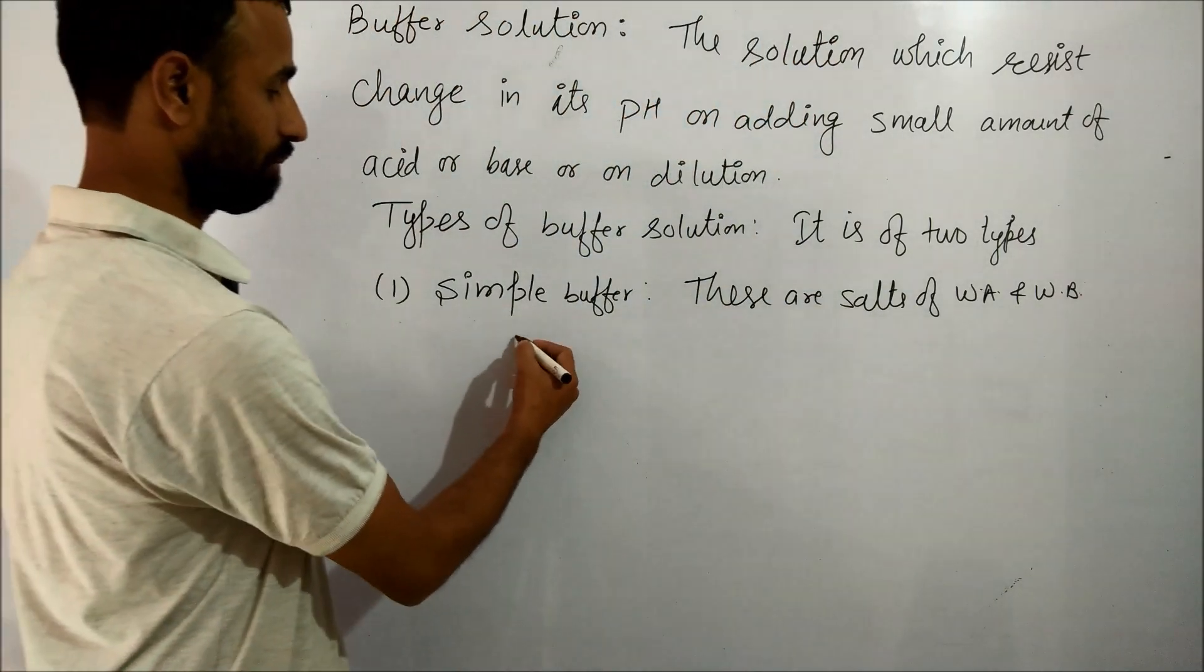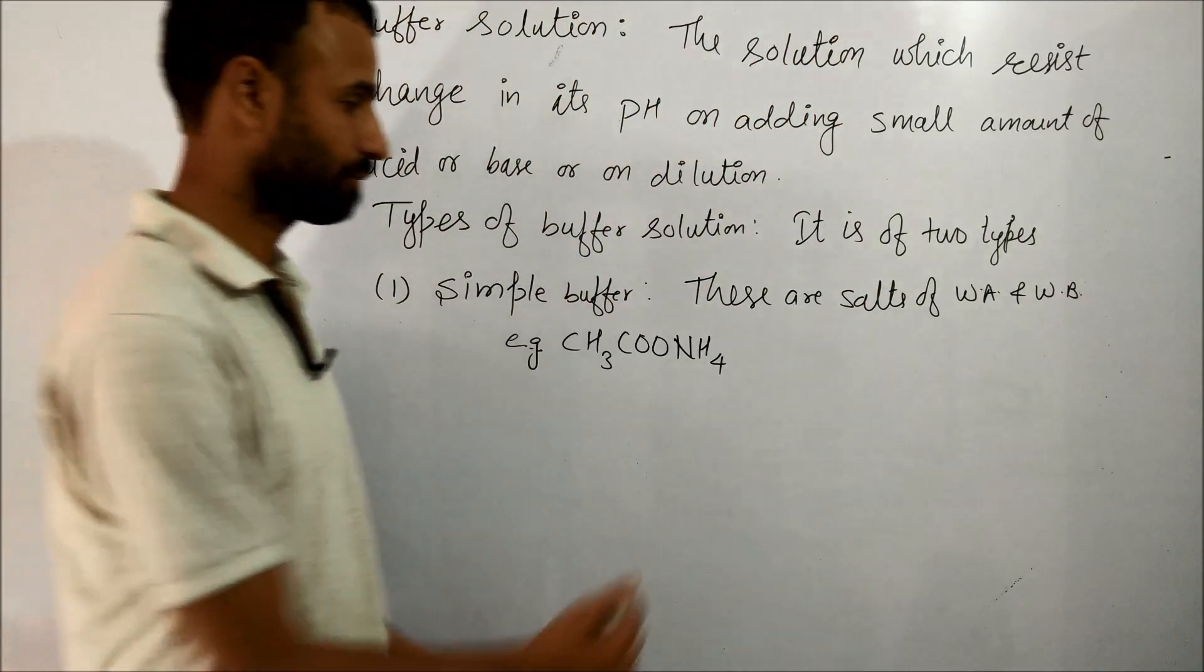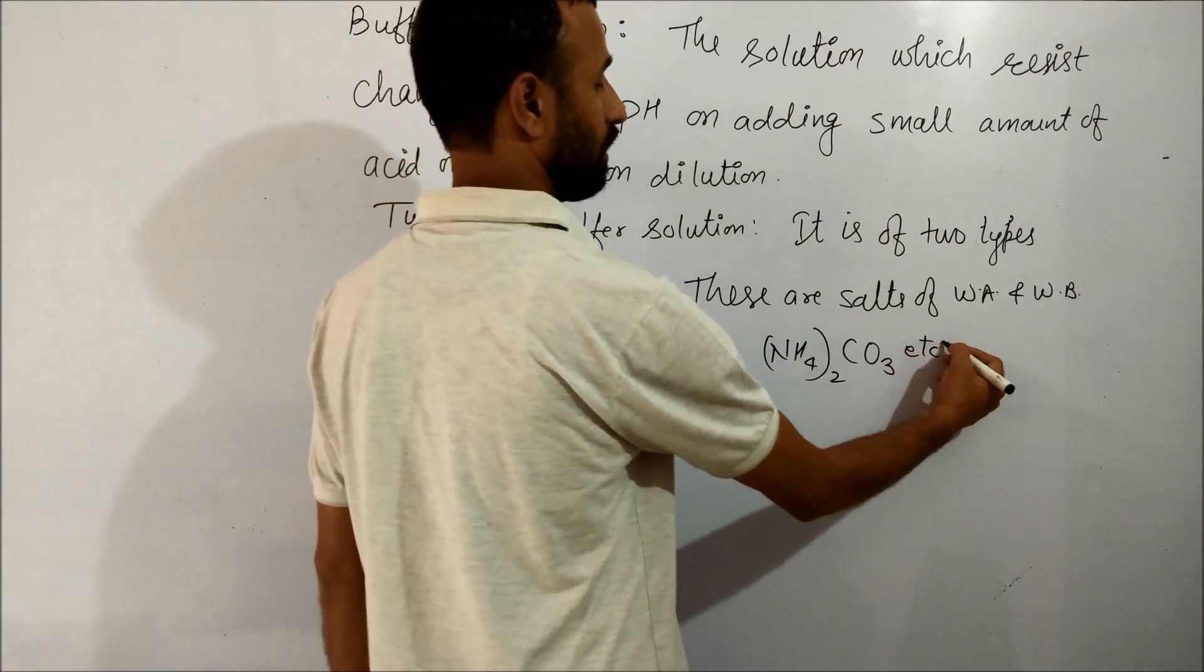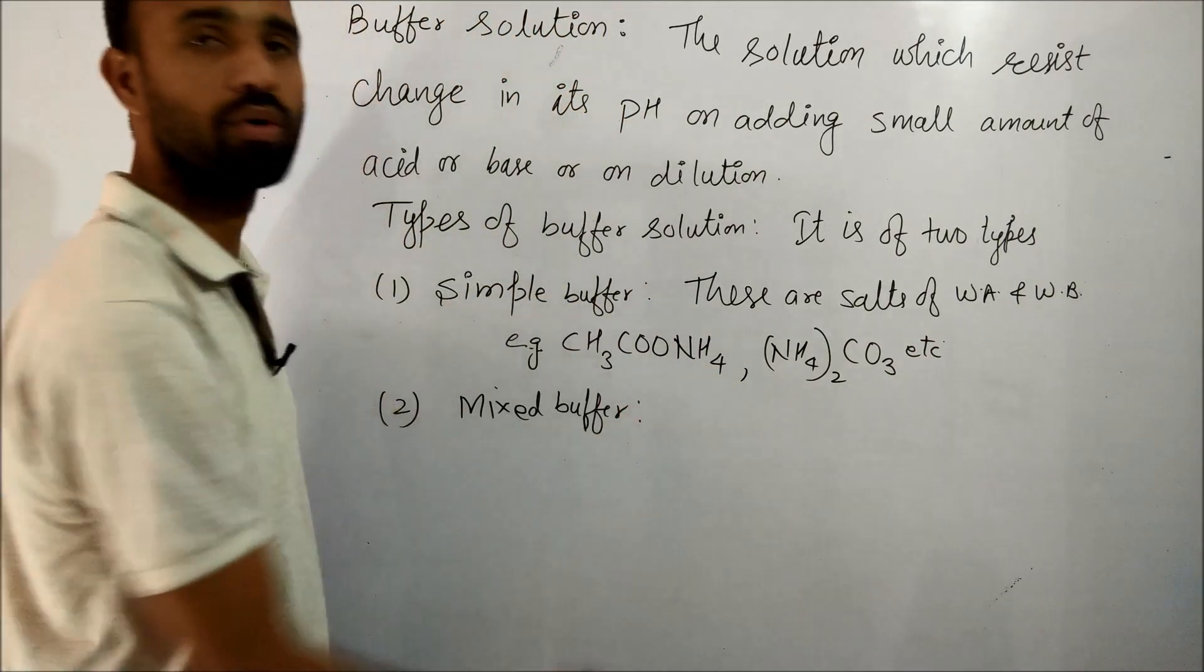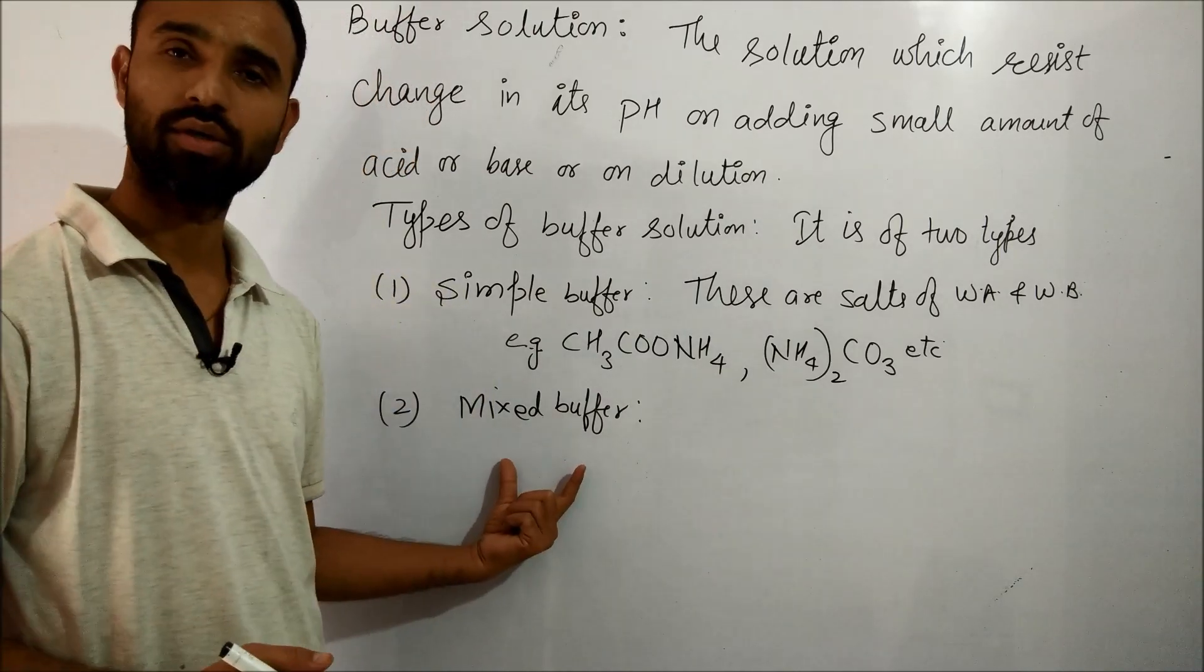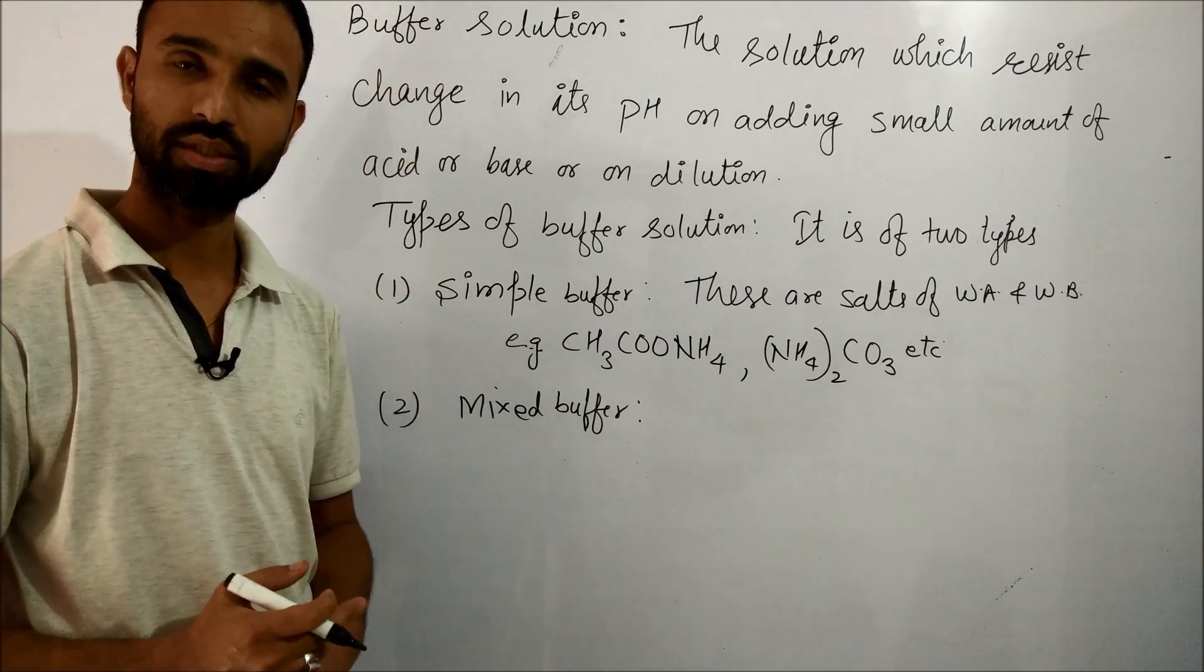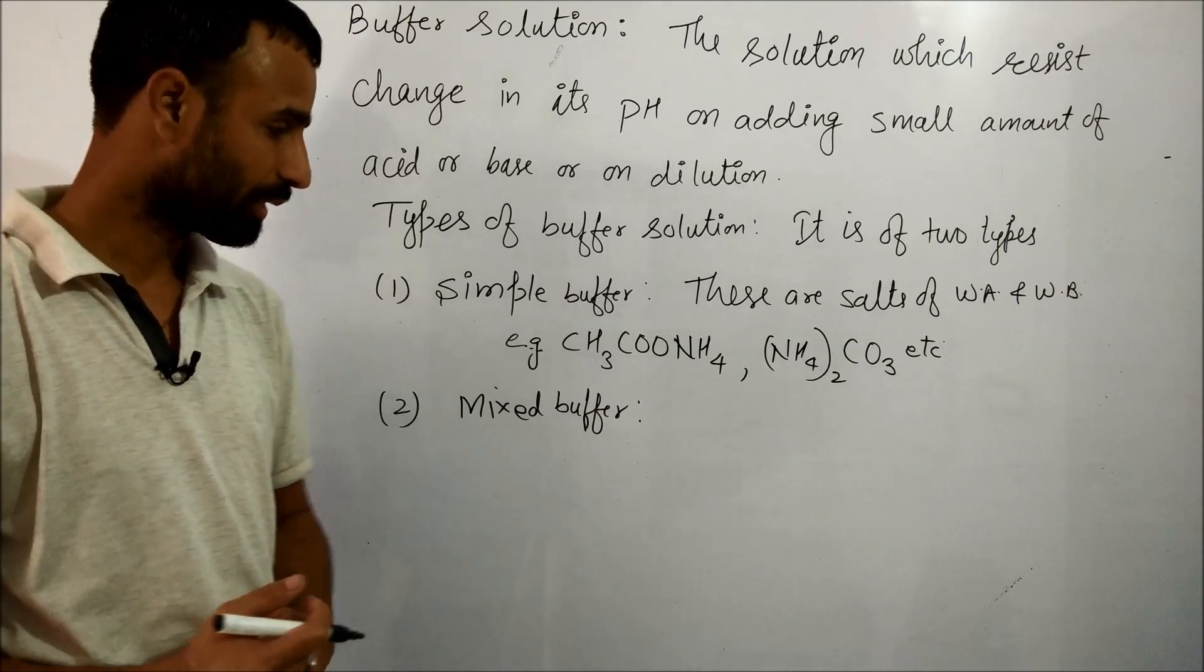For example, Ammonium Acetate, Ammonium Carbonate. Second is Mixed Buffer. Mixed buffer is of two types, subclassified into Acidic Buffer and Basic Buffer.